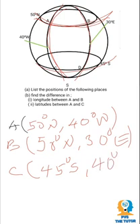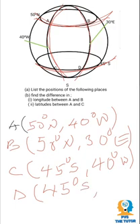And place D - it's on the same latitude with longitude 30 degrees east. So that's how we take positions of places.